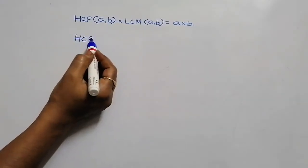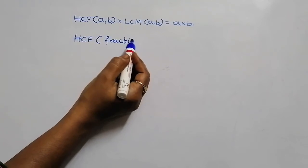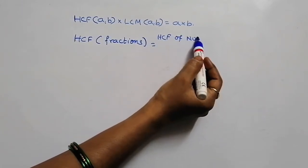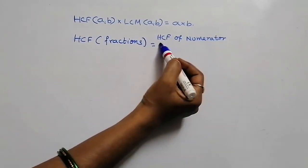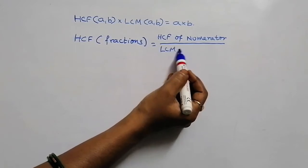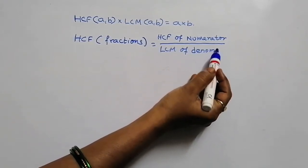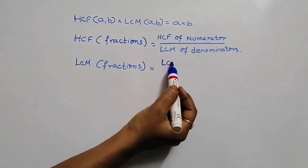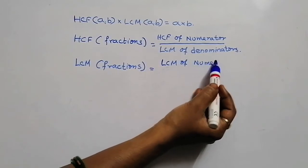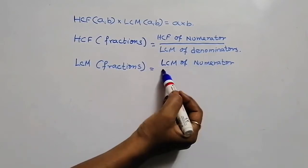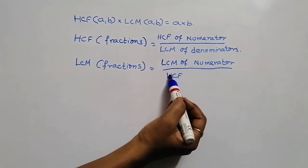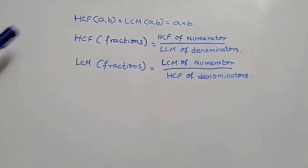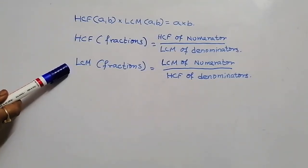The next formula is: HCF of fractions is equal to HCF of numerators divided by LCM of denominators. LCM of fractions is given by LCM of numerators divided by HCF of denominators. These are the three formulas we are going to use in our questions today.